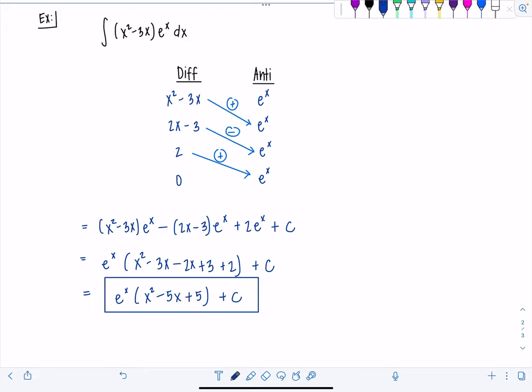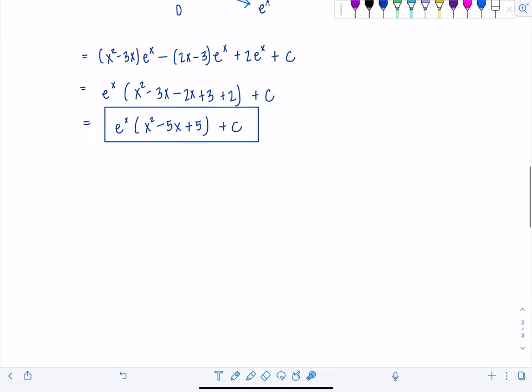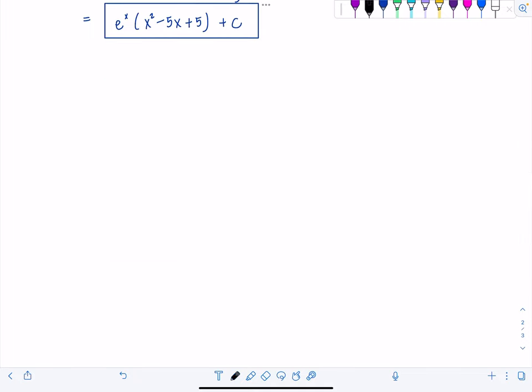Good. Now you can see it's not always helpful to apply tabular integration. If you don't have a polynomial here, it's never going to be zero when you keep differentiating. So it's not going to work out nicely always. It's ideal when you have a polynomial times something else. However, another kind of integral that it does work nicely on are the ones that boomerang. I love the ones that boomerang. So let me show you exactly how it works just in case you wanted to try those this way.